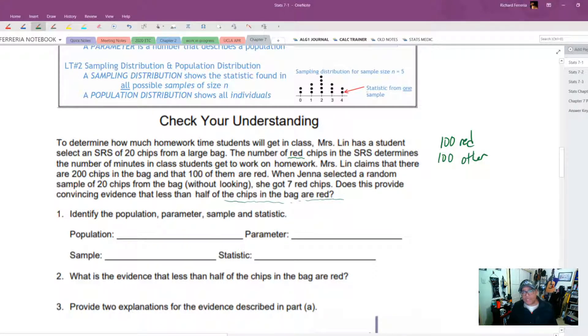So this is an interesting question. She got less than half red chips. And Mrs. Lin says that half of the chips in the bag are red. But Jenna only pulled 7 red chips out of 20. So she's saying, I didn't get 10 red chips. This is fraud. There aren't 100 red chips in the bag.